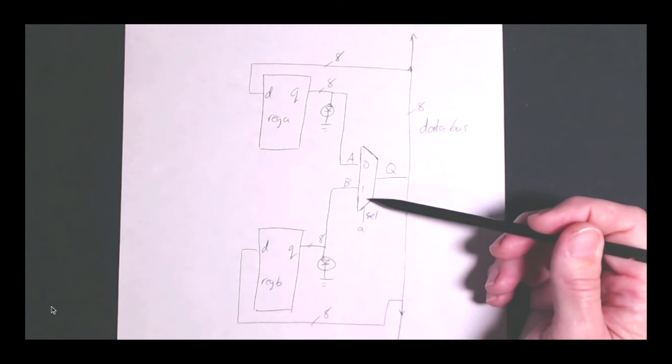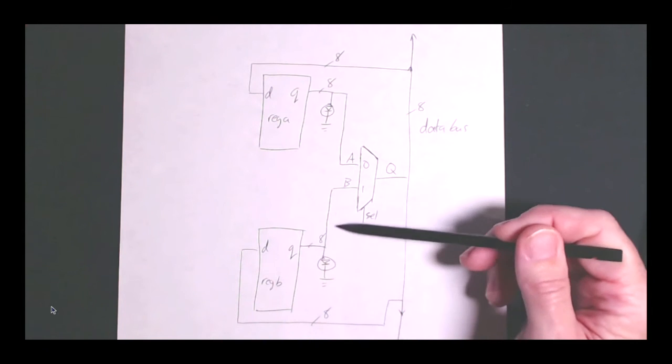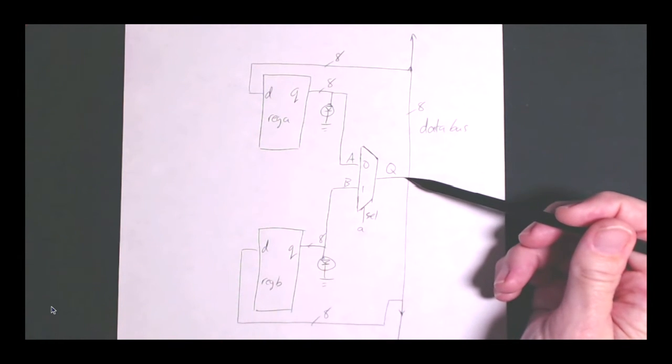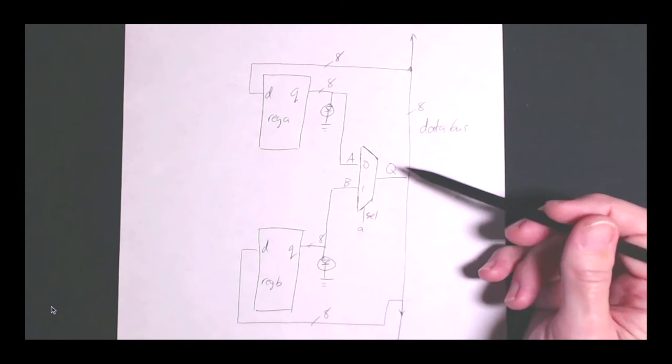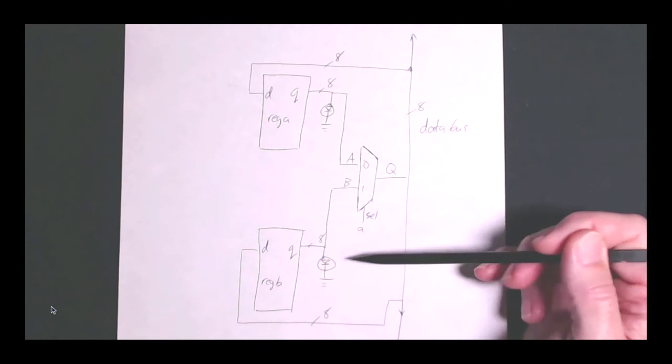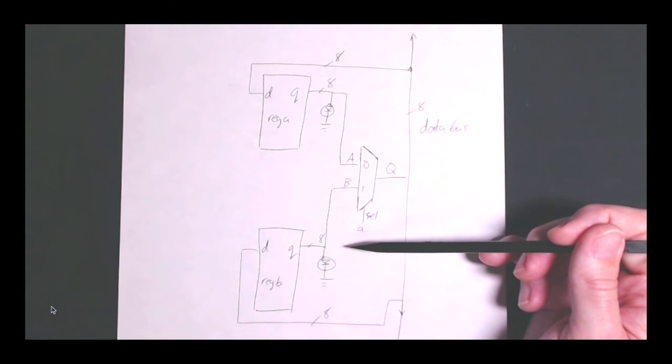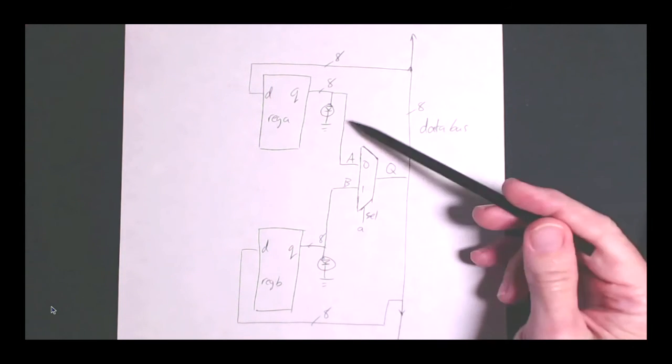And then likewise, if the select signal is a one, then register B's signal gets asserted onto the data bus. And this implementation here, I think is how you have to arbitrate signaling on an FPGA.